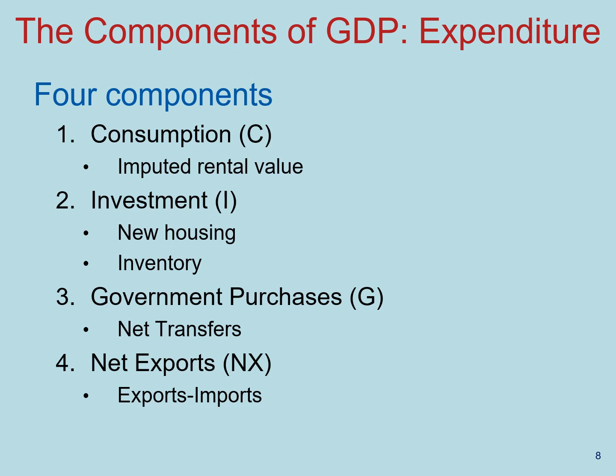Lastly, we have net exports, which are the difference between exports and imports. Anything we sell to foreigners counts as an export — those were things made in the United States, so they count in GDP. We also buy many goods and services from other countries, and because those will be counted in consumption, investment, or government purchases, we would be inflating GDP if we don't subtract them. Subtracting imports makes the adjustment necessary to only count economic activity within our country.